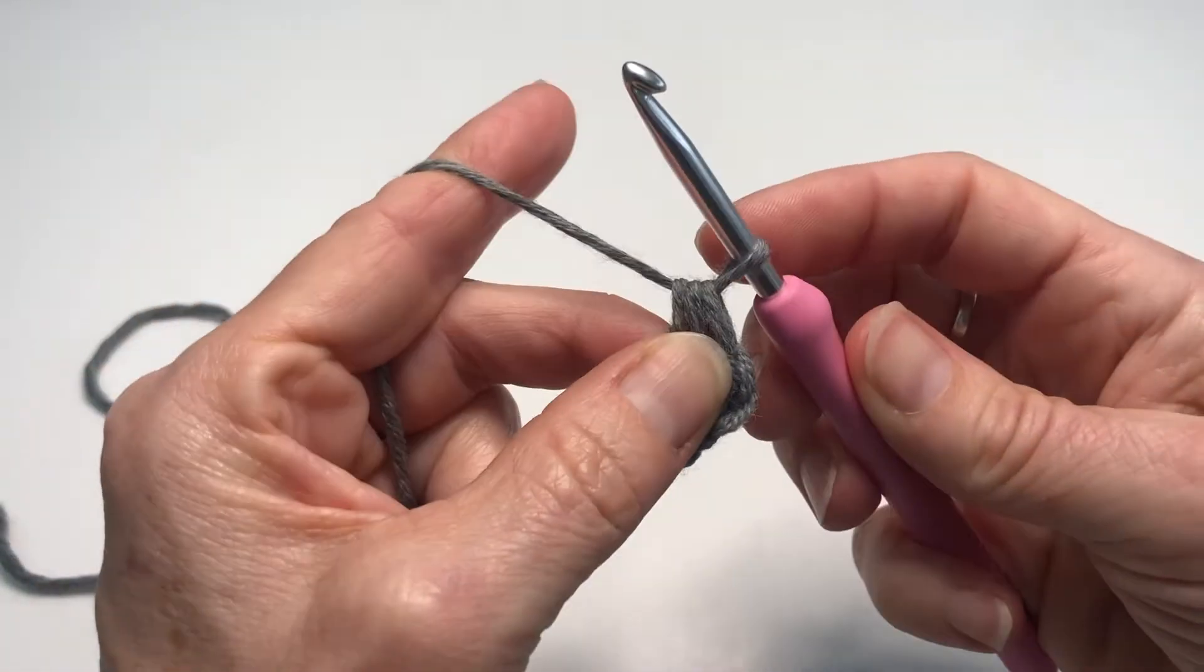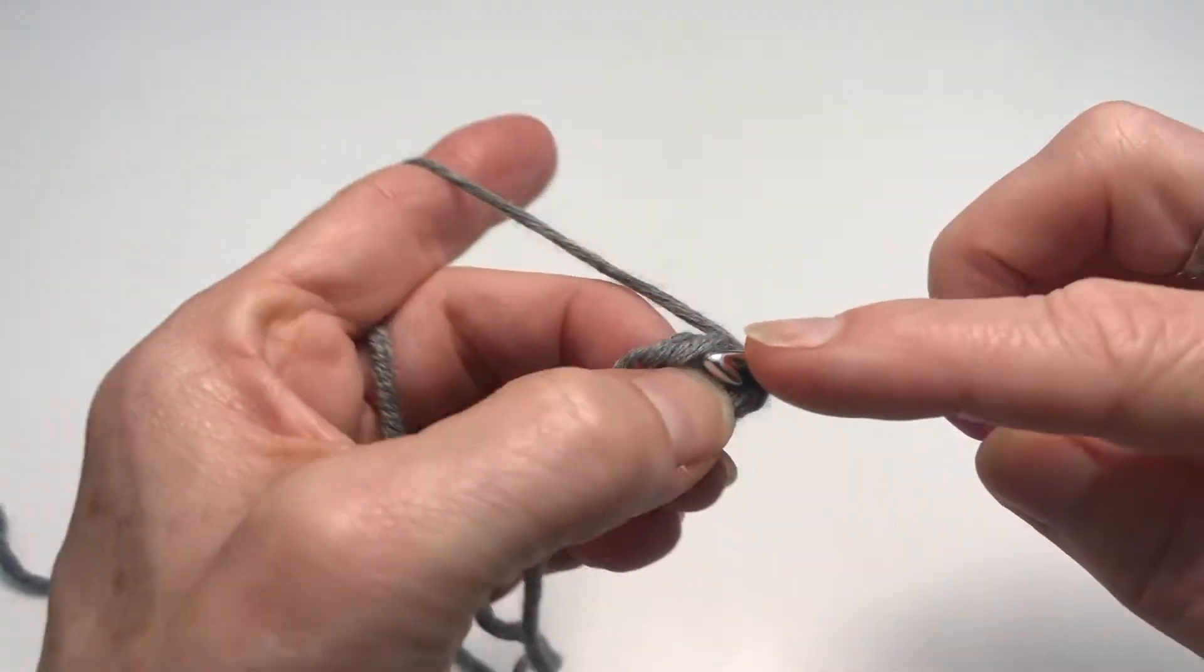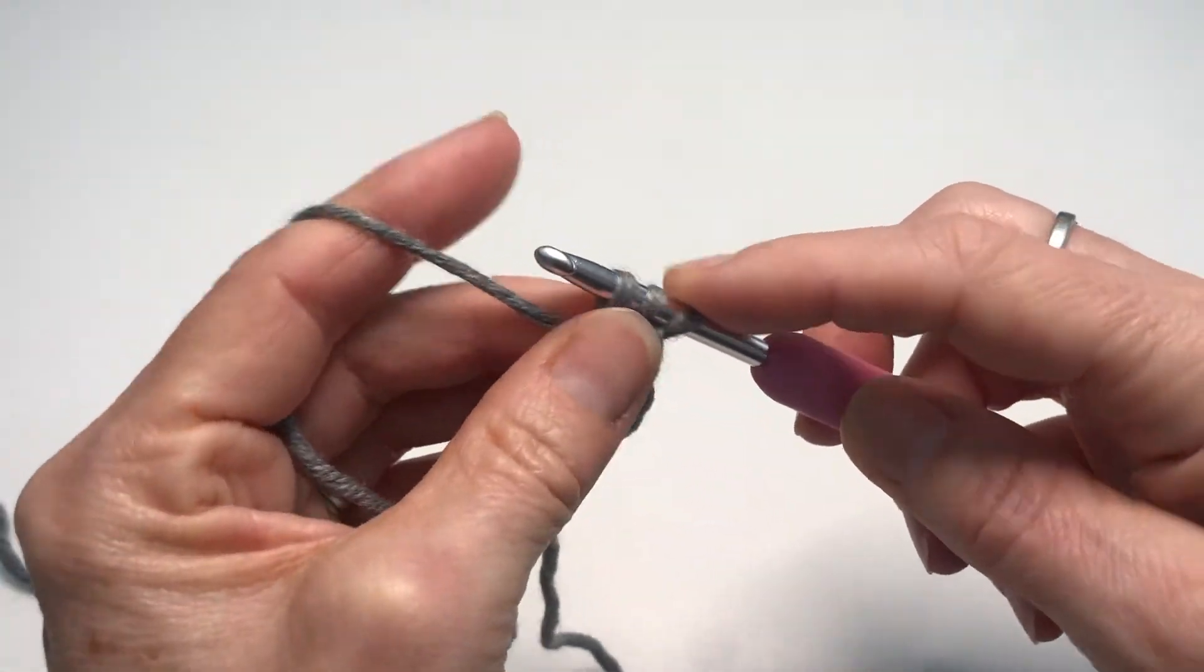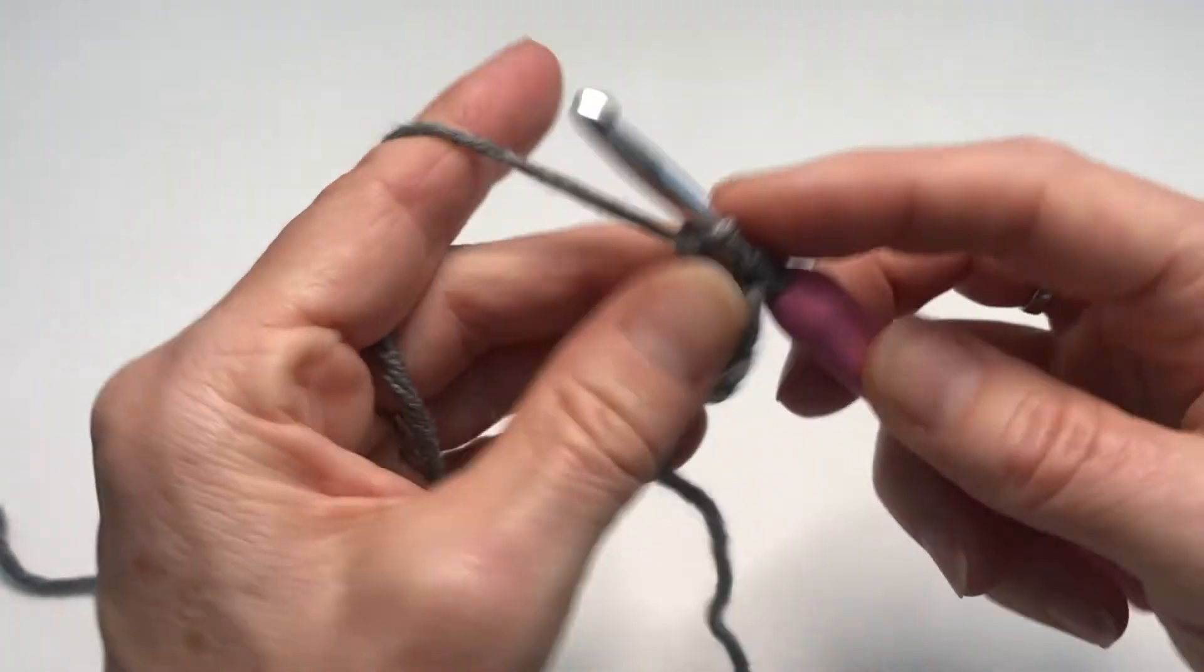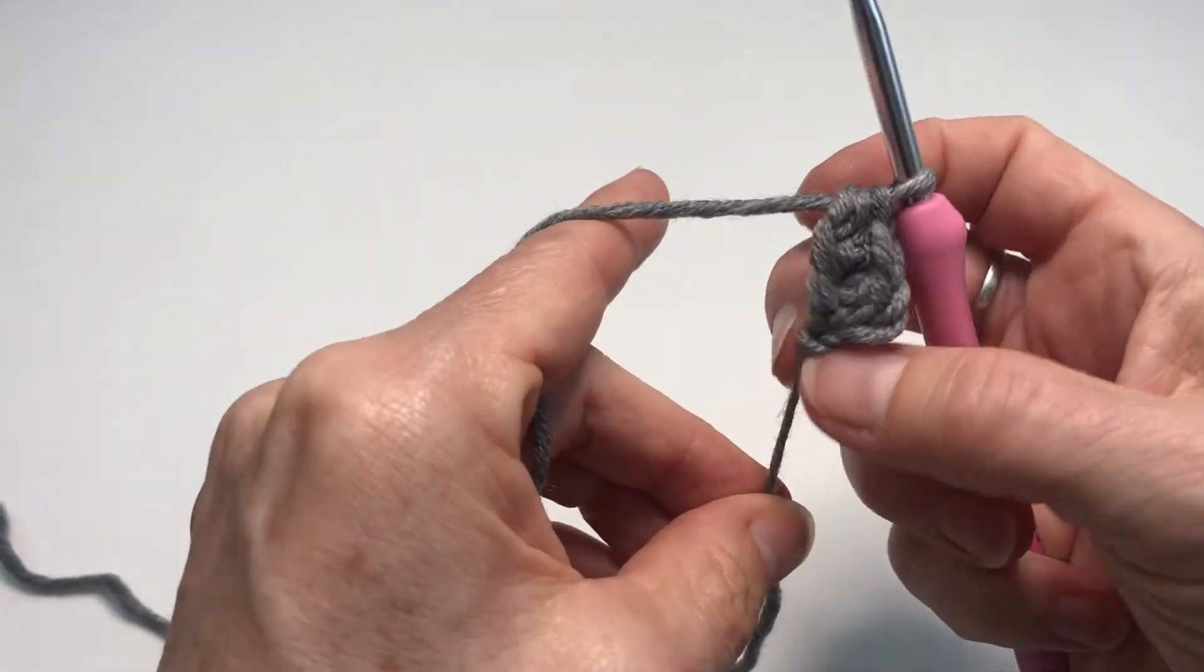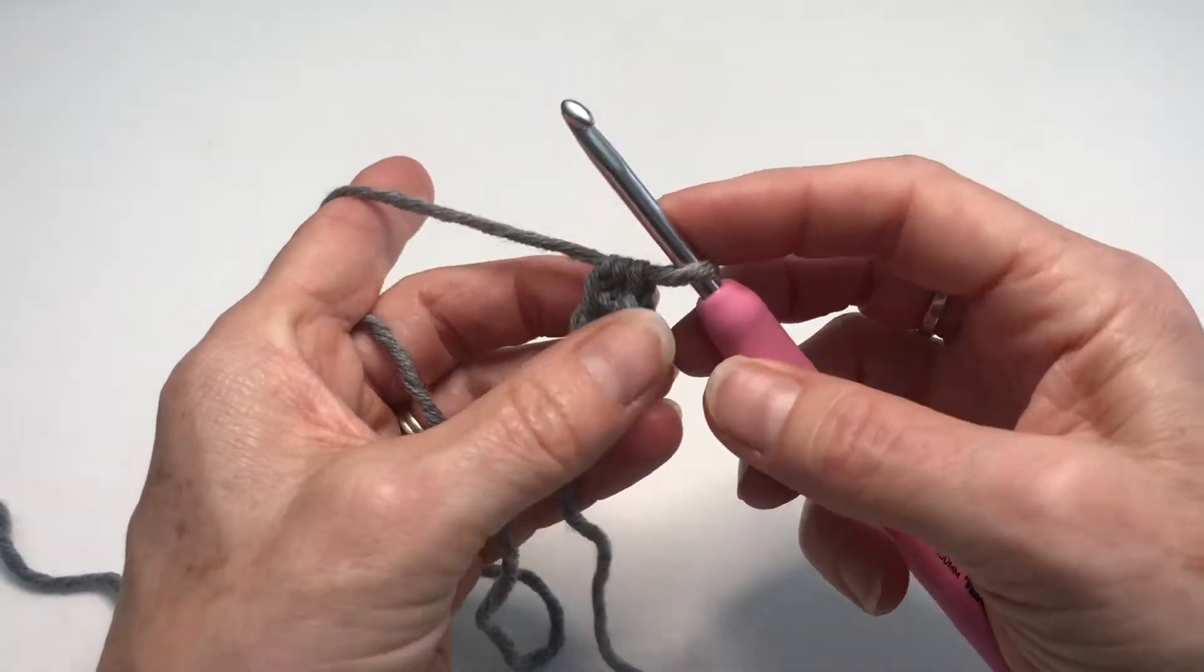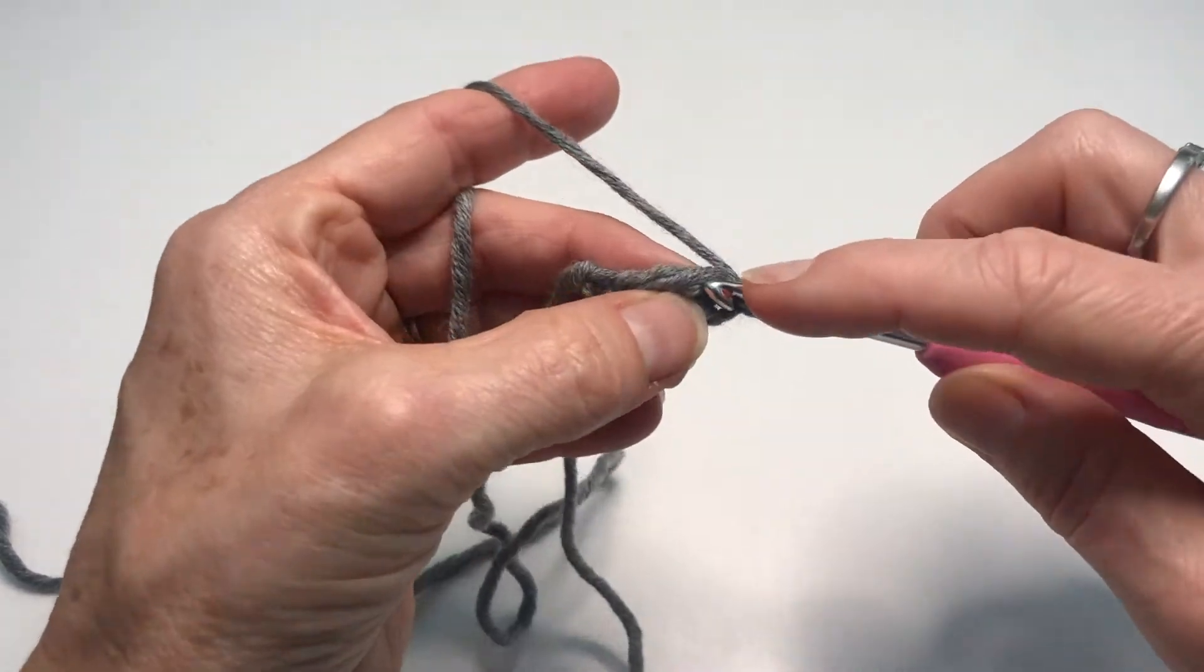And again, yarn over, find the V, insert your hook under the V, pull back, chain one, and then make our half treble. And that's all there is to it. We continue this process until we've created as many stitches as required. I'll just make a few more.